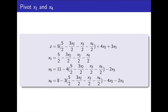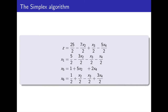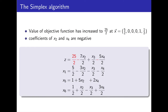Pivoting x1 and x4, we swap the roles of the entering variable x1 and the leaving variable x4. We make x1 the subject of the tight constraint. The leaving variable x4 becomes a non-basic variable. We replace all instances of the entering variable with its right-hand side representation. We have now obtained this new slack form. Calculating the basic feasible solution by setting the non-basic variables to zero, we can see that the value of the objective function has increased to 25 over 2. Notice also that the coefficients of x2 and x4 are negative.